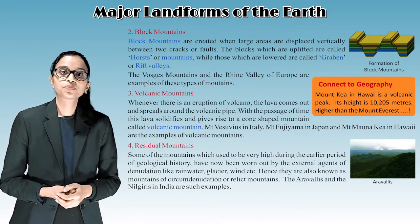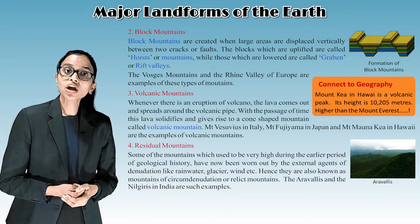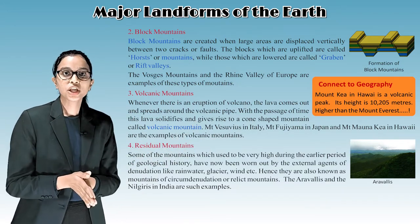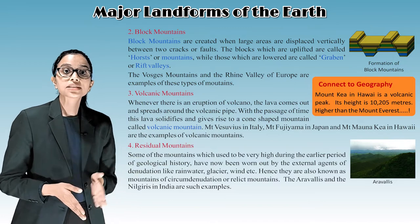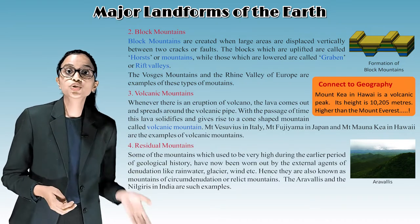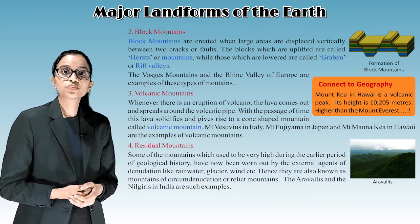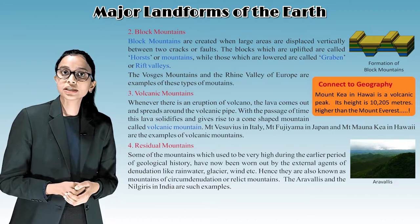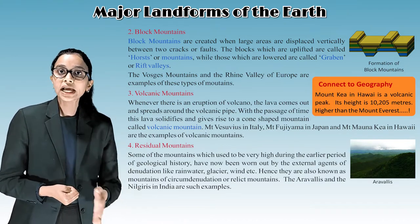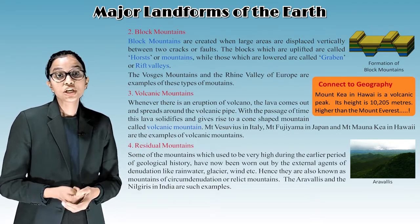Volcanic mountains: whenever there is an eruption of a volcano, the lava comes out and spreads around the volcanic pipe. With the passage of time, this lava solidifies and gives rise to a cone-shaped mountain called a volcanic mountain. Mount Vesuvius in Italy, Mount Fujiyama in Japan, and Mount Monachia in Hawaii are examples of volcanic mountains.